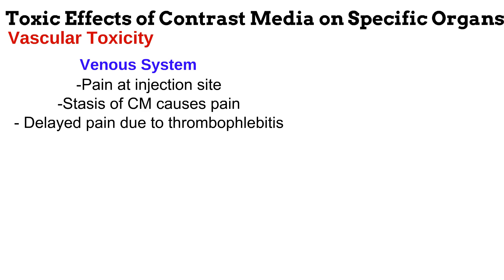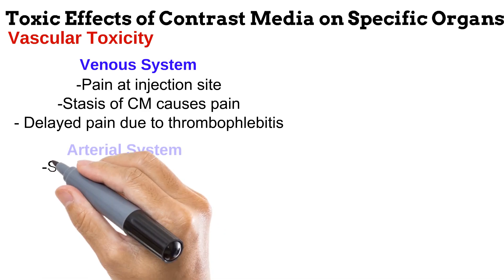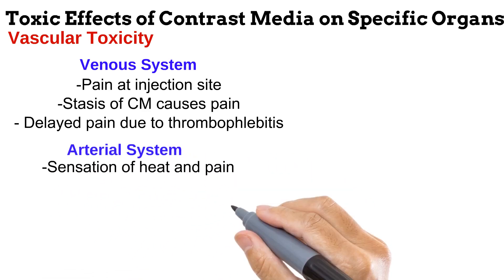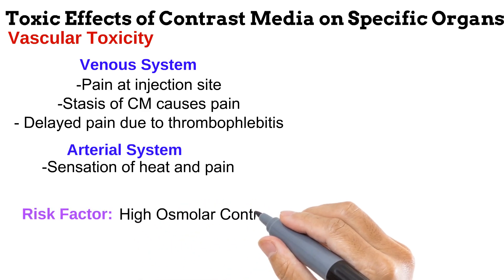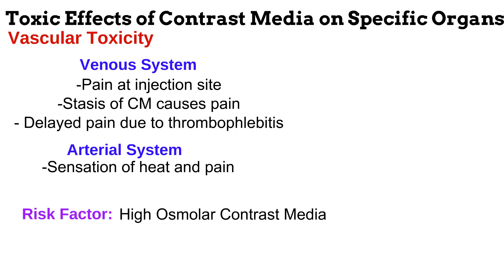The pain from stasis in the arm veins is relieved by adducting the arm. Thirdly, contrast media can cause inflammation of the vein and any clots within the vein, known as thrombophlebitis, which will cause a delayed pain. Meanwhile, contrast media injected through the arteries can cause a sensation of heat and pain. The risk factor for vascular toxicity is the use of high osmolar contrast media, meaning less toxic effects occur when low osmolar contrast media, especially the non-ionic type, is used.